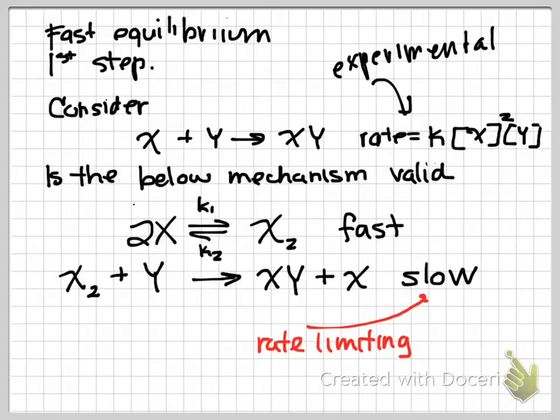And when you write your mechanisms, we write our mechanisms based on this slow step. So if I'm writing my mechanism here, my rate equation would have the form rate equals K X2 squared Y.